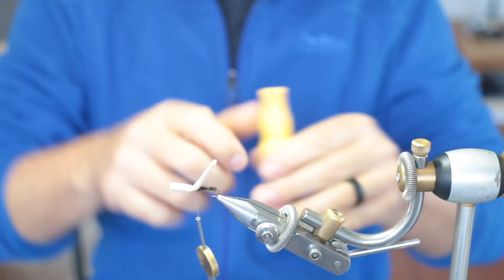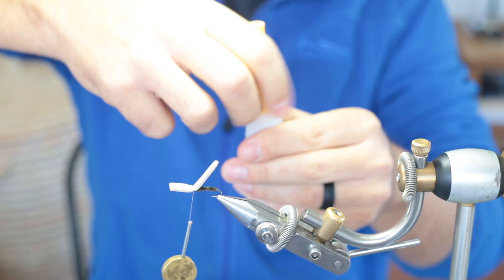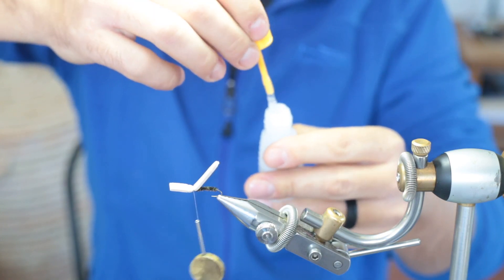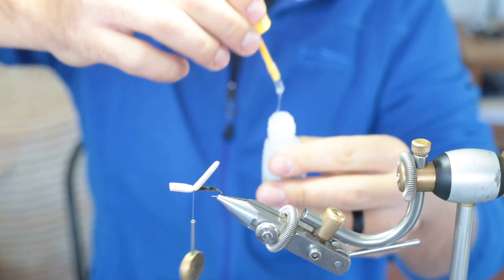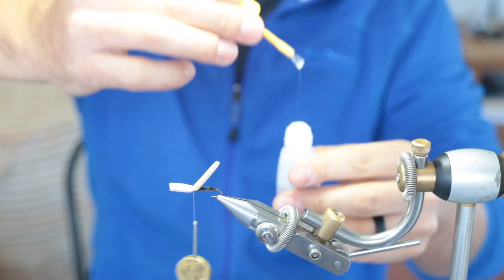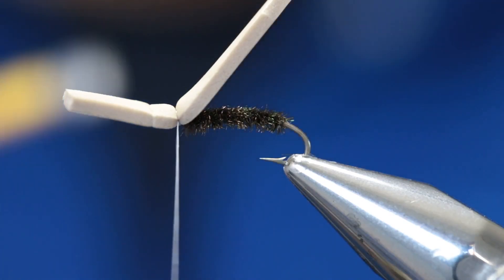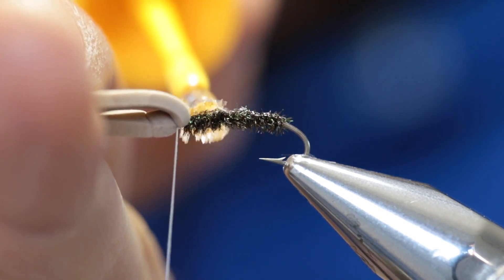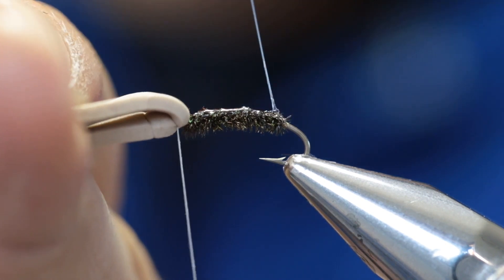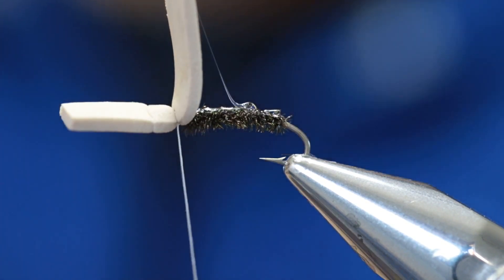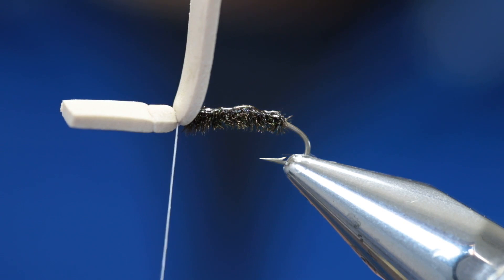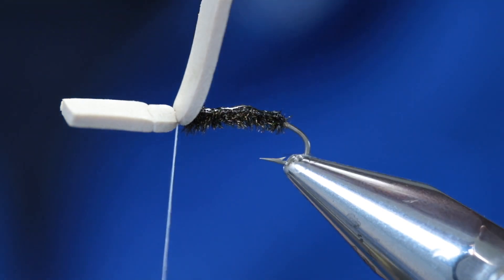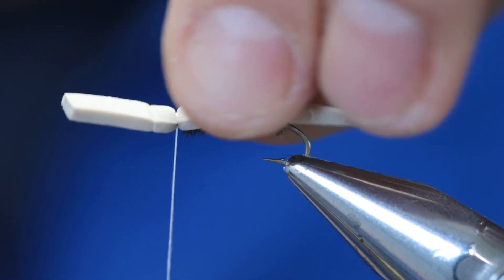So now before we go further we're going to take a little bit of super glue and we're going to brush it right on top of the peacock herl. This will give the fly durability. Fold the foam back and just dab some super glue on top of the peacock herl. Remember to close your super glue bottle properly before going on, otherwise the super glue won't last that long.